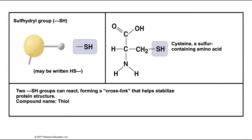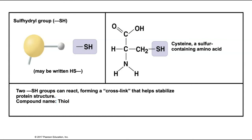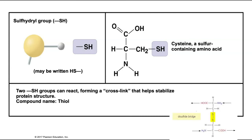Group number five: the sulfhydryl group. A sulfhydryl group is comprised of a sulfur atom and a hydrogen — sulfur plus hydrogen gives you sulfhydryl. Molecules carrying these sulfhydryl functional groups are called thiols. An example is the amino acid cysteine, one of the 20 amino acids used as building blocks for our proteins. One very important role of the sulfhydryl group of cysteine is to create cross-link bridges which help stabilize the 3D structure of proteins.